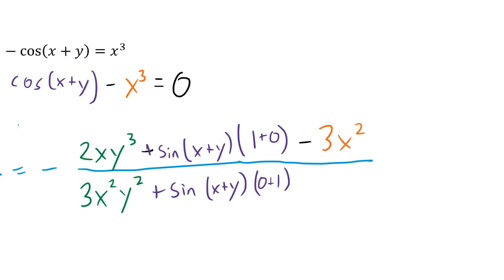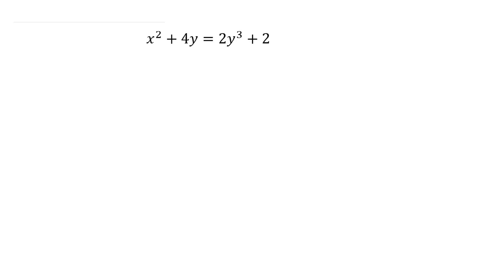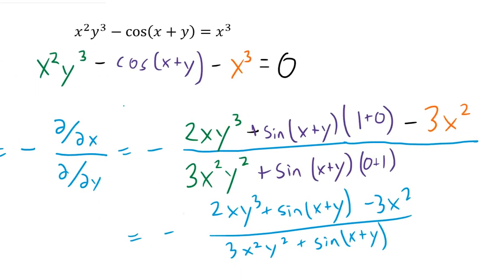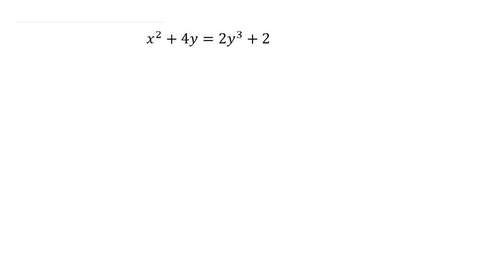If I wanted to clean it up, I could write the numerator as negative 2xy³ plus sine(x+y) minus 3x². Note that this would have been a lot if I had done this the normal way — I would have had some product rule here, some chain rule there. This trick did still save me time.